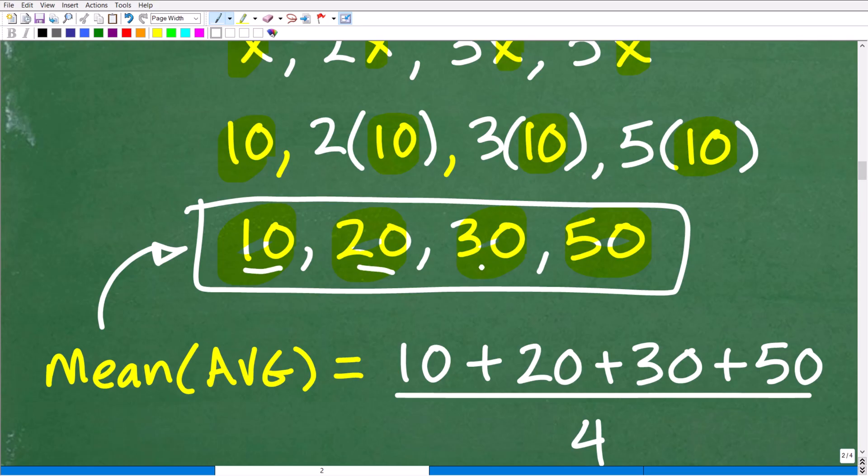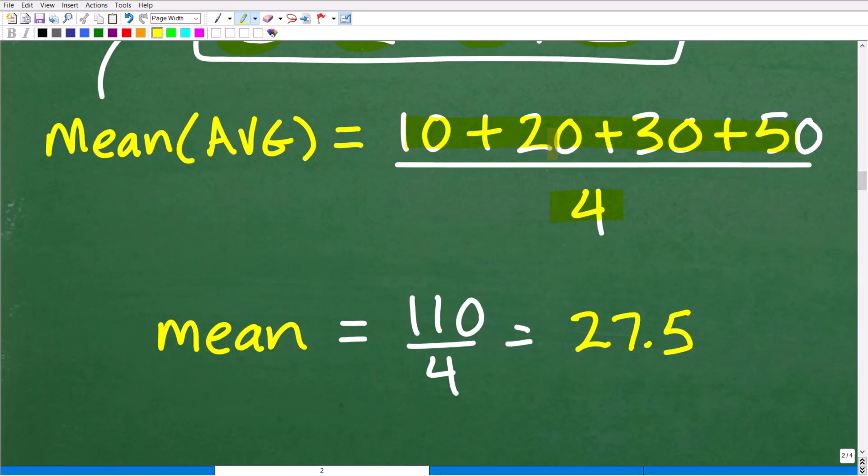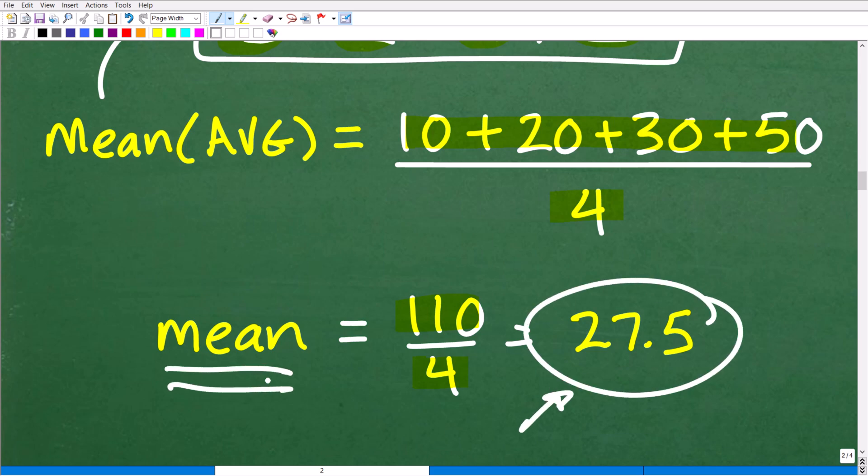How do we find the average? We have 1, 2, 3, 4. We're going to add all these numbers up, and then we're going to divide by how many numbers we have, which, of course, are 1, 2, 3, 4, and then we'll get the right answer. So 10 plus 20 is, of course, 30 plus 30 is 60 plus 50. That's 110 divided by 4. Feel free to use your calculator and you get 27.5 as the mean.